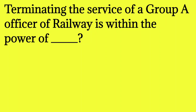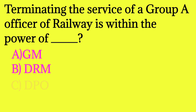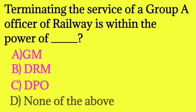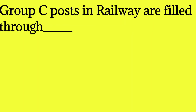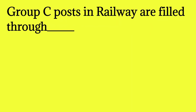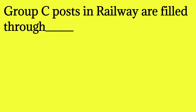Terminating the service of a Group A officer of railway is within the power of which authority? The answer is none of the above — neither GM, nor DRM, nor DPO can remove a Group A officer.